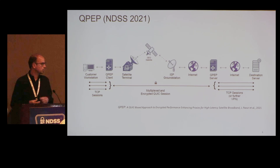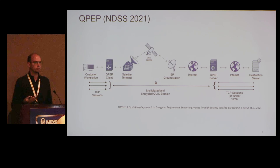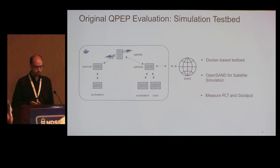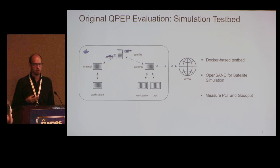This was shown in the original paper. The testbed was a relatively straightforward implementation using a Dockerized version with OpenSend, publicly available. You can use it on your own terminal or on the internet. However, the key limitation was that we couldn't test it with a real satellite and real satellite dish — it was all simulated. Standard networking performance tests were used: page load times, throughput.